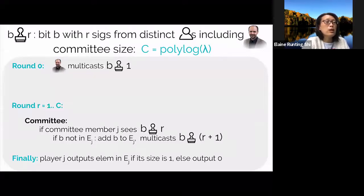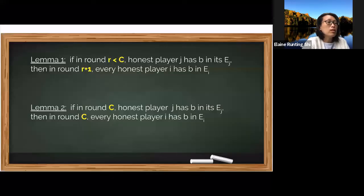To see why the protocol works, we can first show that for any r that is not the final round, if some honest player adds b to its extracted set in round r, then all honest players will have added b in the immediate next round. This is because in the protocol, whenever an honest player adds a bit to its extracted set, say in some round t less than r, it will send a t plus one batch of votes on b. So in the immediate next round, all of the honest players will also add b if they haven't done so already.